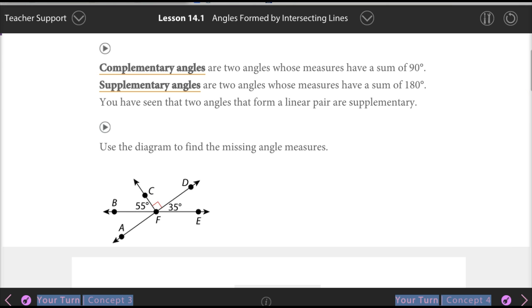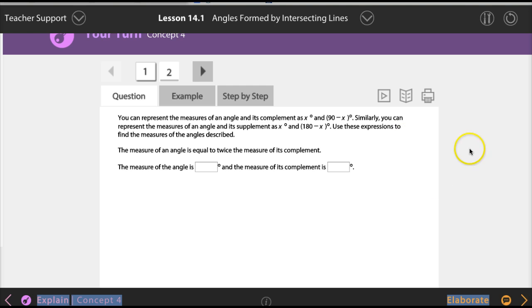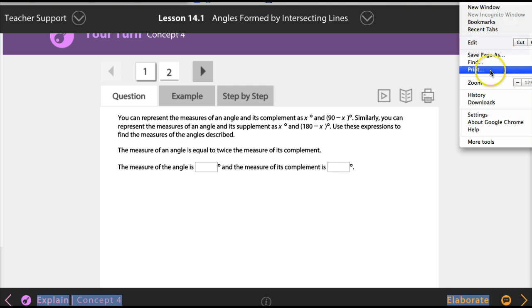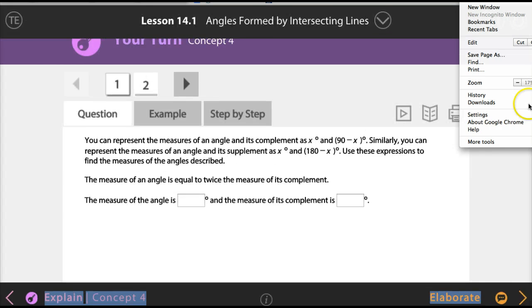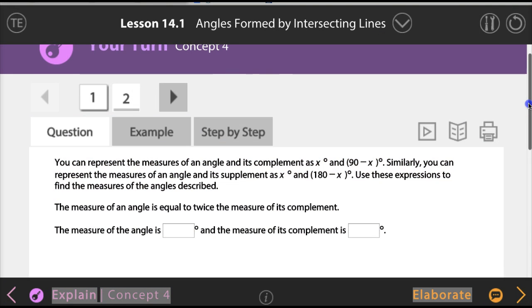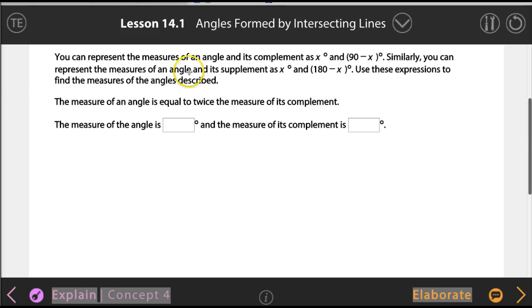Let's go straight into your homework question and we're going to be done. Yay, shortest video ever. You can represent the measures of an angle and its complement as x degrees and 90 minus x degrees. Because remember complement, we're talking about how it's 90 degrees. When you add these two together, it's 90 degrees. Similarly, supplementary is going to be 180 degrees. The measure of an angle is equal to twice the measure of its complement.